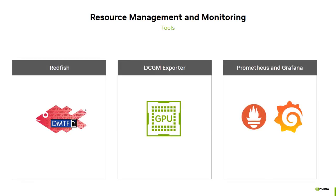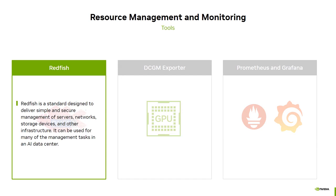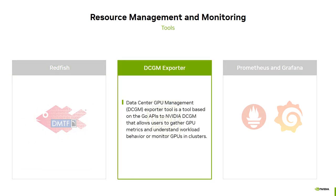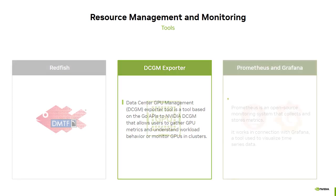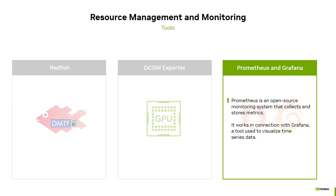Depending on the configuration and servers in an AI cluster, there are a variety of tools that can be used for management and monitoring. Redfish, by the Distributed Management Task Force, is a standard designed to deliver simple and secure management of servers, networks, storage devices, and other infrastructure, and can be used for many management tasks in an AI data center. For data centers with NVIDIA GPUs, the Data Center GPU Management or DCGM Exporter tool is based on the Go APIs to NVIDIA DCGM and allows users to gather GPU metrics and understand workload behavior or monitor GPUs in clusters. Prometheus is an open-source monitoring system that collects and stores metrics, and works in connection with Grafana, a tool used to visualize time series data.